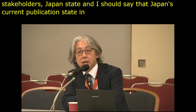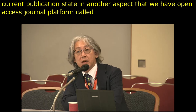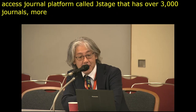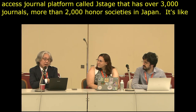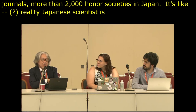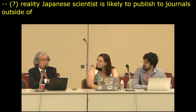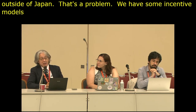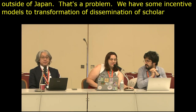Japan has an open access journal platform called JStage with over 3,000 journals from more than 2,000 academic societies in Japan — it's like SciELO in Brazil. But in reality, Japanese scientists tend to publish their research output in journals outside Japan. That's a problem, so we have to develop some incentive model toward a transformation in the dissemination of scholarly output.